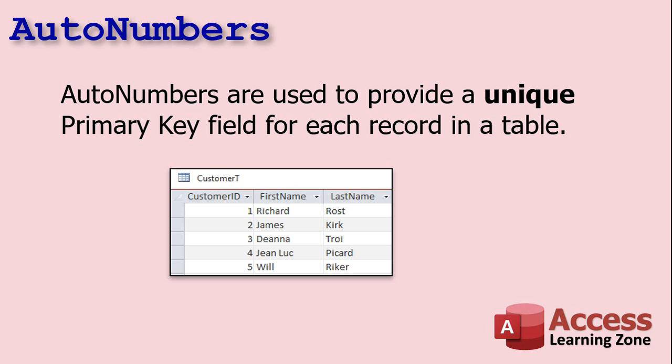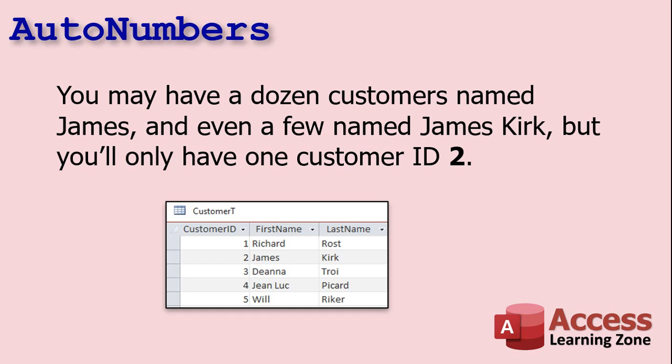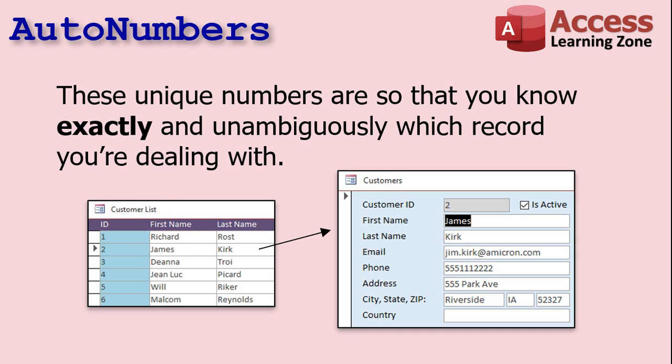Auto numbers are used to provide a unique primary key field for each record in the table. You might have a dozen customers named James, and even a few named James Kirk, but you'll only have one customer ID 2, only one customer ID 4. These unique numbers are so that you know exactly and unambiguously which record you're dealing with. If I say go open James Kirk's record, you have four of them — but if I say go open customer number 2, you know exactly who that is.